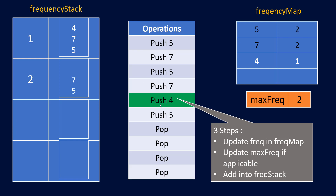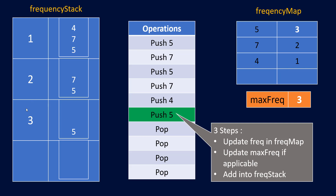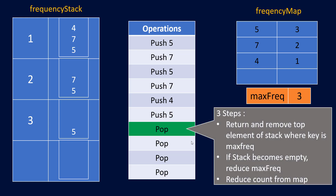Pushing 4 adds it to the frequency map at count 1 and into the frequency stack at key 1. Pushing 5 again increments its frequency to 3, updating max frequency to 3, and 5 is pushed into the frequency stack at key 3. Now we're ready for the pop operations.